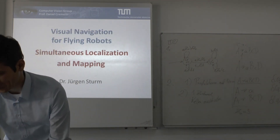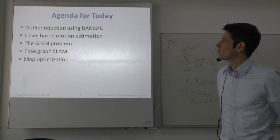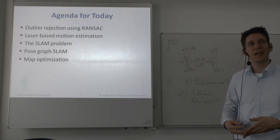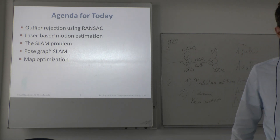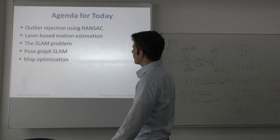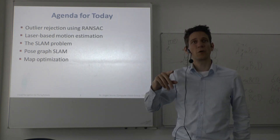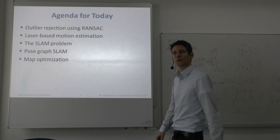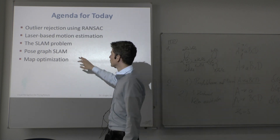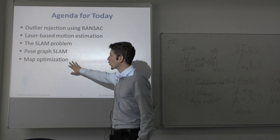Today we will look at the so-called SLAM problem — simultaneous localization and mapping — which is a bit in contrast to what we looked at last week, because last week we were focusing on cameras as the main sensor. SLAM looks at this problem more from the robotics point of view with laser scanners but also with a different combination of multiple sensors. The agenda for today: we will first look briefly at RANSAC, then at laser-based motion estimation, then the SLAM problem, the pose-graph SLAM problem, and finally at how to optimize maps.